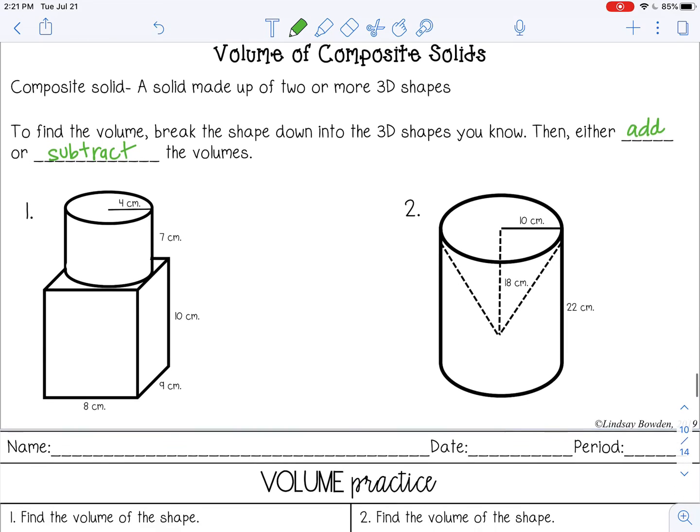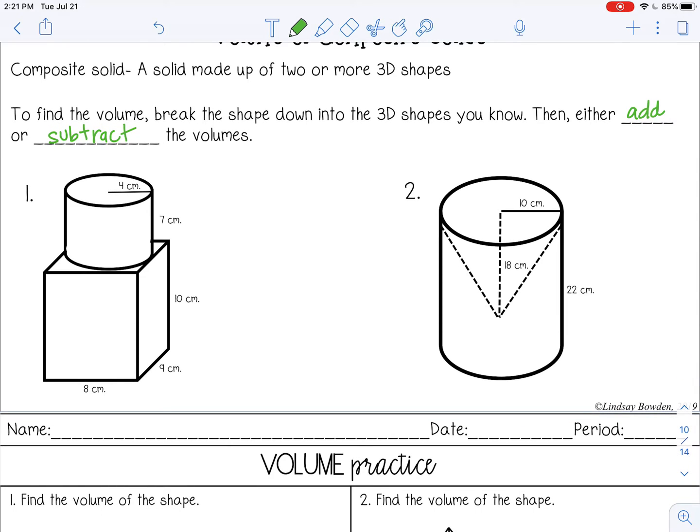So for example, in number one, I see two three dimensional shapes. I see a cylinder and I see a rectangular prism. So if I want to find the volume of that whole shape, I can find the volume of each shape individually. And then I'm going to add them together.